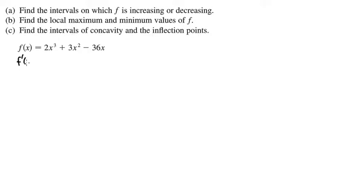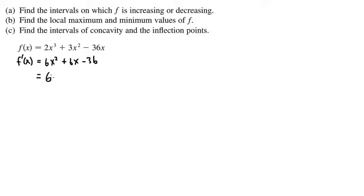So let's go ahead and find f prime of x. The derivative of 2x to the third power will be 6x squared, the derivative of 3x squared is going to be plus 6x, and the derivative of minus 36x is just minus 36. This is a quadratic, so we'll try to factor it as much as we can. We first see that we have 6, 6, and negative 36, so we can factor out 6, giving us x squared plus x minus 6.